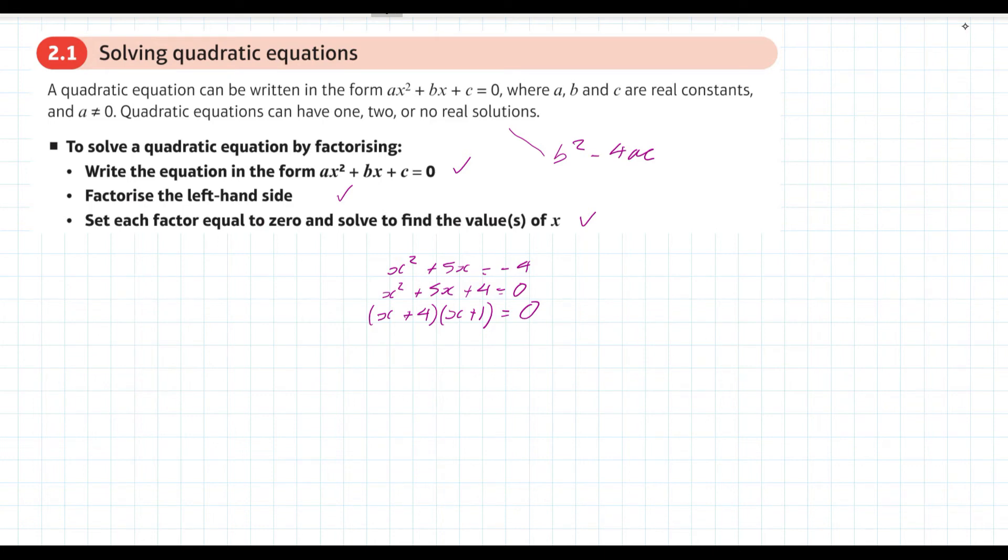We're looking for the values we can substitute for x to make at least one of the brackets equal zero. For the left bracket (x + 4) to go to zero, x must be -4. For the second bracket, x must be -1.